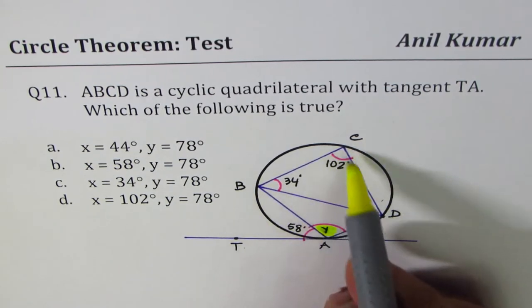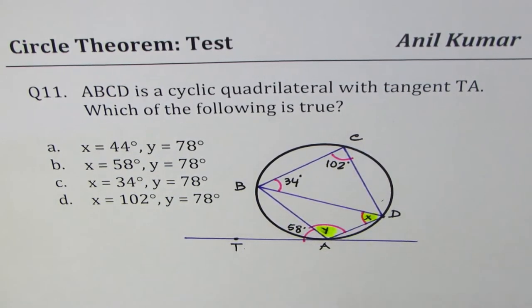Cyclic quadrilateral means vertices on the circle. You can always pause the video, answer the question, and then look into my suggestions. Now, let's start with the cyclic quadrilateral itself.